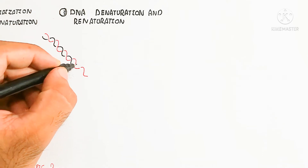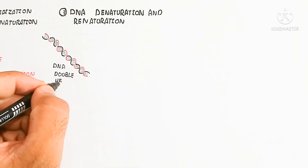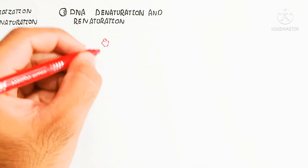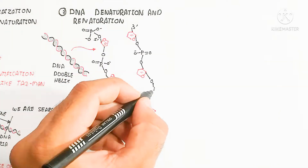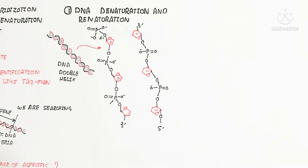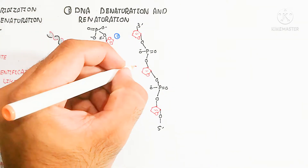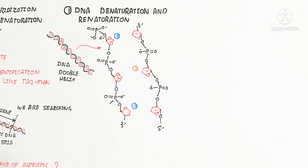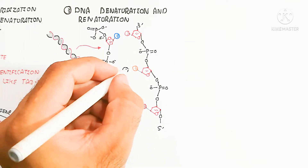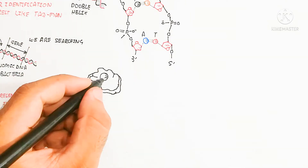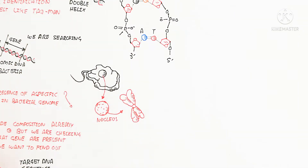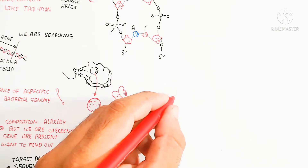First we should understand DNA denaturation and renaturation, then nucleic acid hybridization. DNA is a double helical antiparallel structure with a phosphate and ribose sugar backbone, attached to nitrogen bases by hydrogen bonding — adenine with thymine (double bond) and guanine with cytosine (triple bond). This is the Watson and Crick model of DNA.